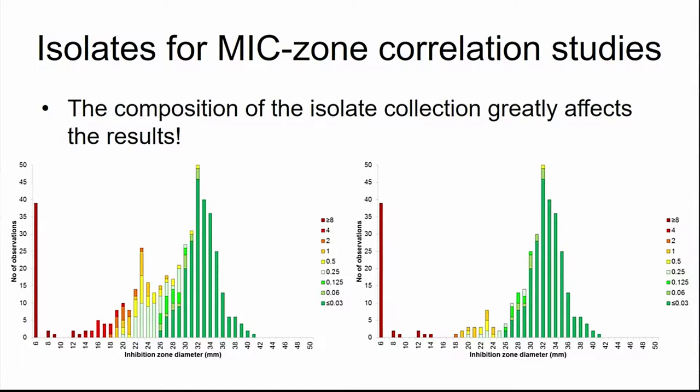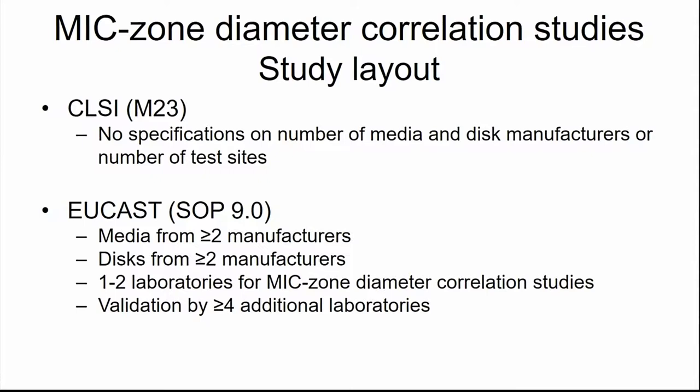How these studies are set up differs between CLSI and EUCAST. Currently, CLSI guidelines do not specify the number of media or disc manufacturers or testing sites. EUCAST specifies media from at least two manufacturers, discs from at least two manufacturers, and performs the basic MIC-zone diameter correlation work at one or two skilled laboratories, followed by a validation study involving network laboratories. It is extremely important to demonstrate that the method is robust across materials from different manufacturers.